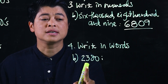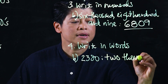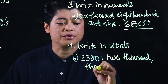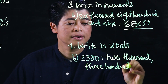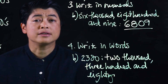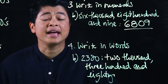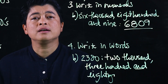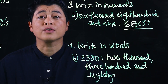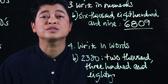The next problem is to write in words: 2,380. We write two thousand, and we put a comma after the thousand, then three hundred and eighty. In Singapore Math they use the word 'and,' so if in our countries we don't use the word 'and' then we don't need to. However, if we're following the book we need to follow as they teach, which means we use the word 'and.'